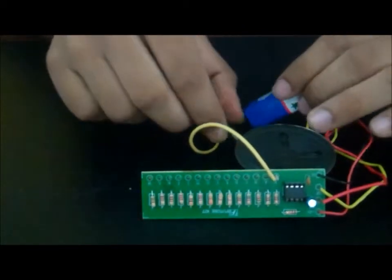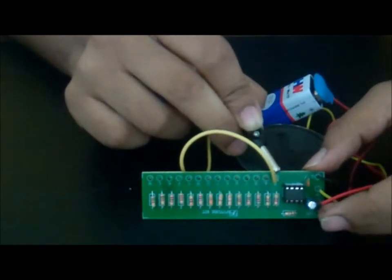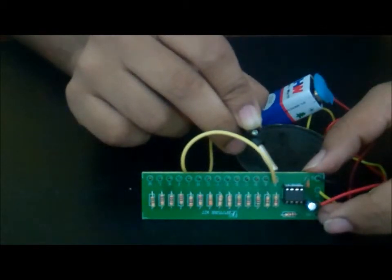Then take the probe and touch it to any one of the metal heads marked A through M. You will hear the tone from the speaker which has 13 different tones depending on which point is shorted.